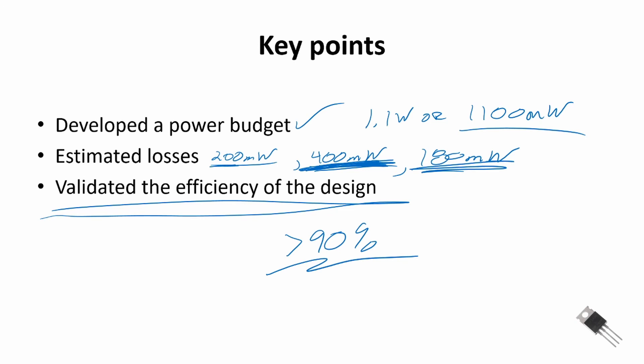So those are the two videos for designing at least at a high level a buck converter. As I've said before, design is a very iterative process that you may go through this once and then look at your design and then start adjusting different components to make either improvements or reduce costs. We really did not look at a cost criteria in this design, but that's all part of the design process. So thanks for watching this design example.